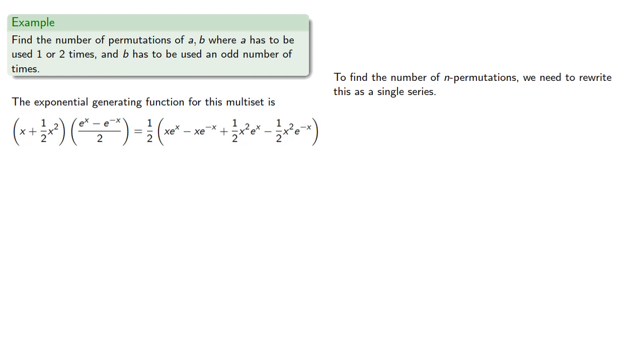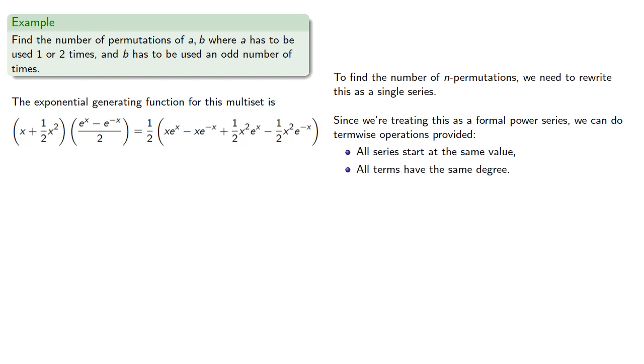To find the number of n permutations, we need to rewrite this as a single series. Since we're treating this as a formal power series, we can do term-wise operations, provided all of our series start at the same value, and all the terms we're adding have the same degree.